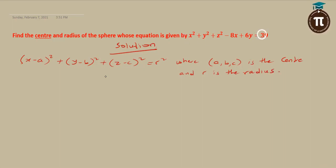That means I am going to write this equation this way to obtain the center as well as the radius of the sphere. From the equation I have x squared plus y squared plus z squared minus 8x plus 6y equals 39. Bring all the x together. I have x squared minus 8x, then plus y squared plus 6y, then plus z squared equals 39.